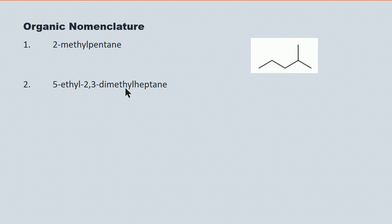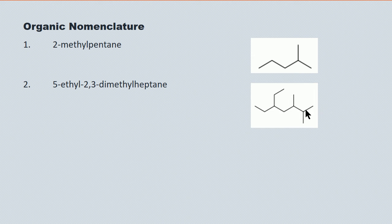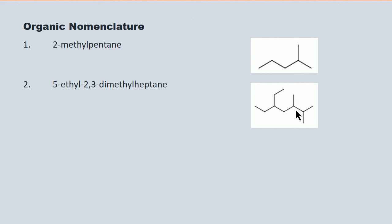5-ethyl-2,3-dimethylheptane. Heptane means a seven-carbon parent chain — one, two, three, four, five, six, seven — so there's our heptane, the jagged line through the middle of the molecule. There's our 2-methyl and our 3-methyl. And there's our 5-ethyl — ethyl, of course, has got two carbons in it, attached to the fifth carbon in the longest chain.